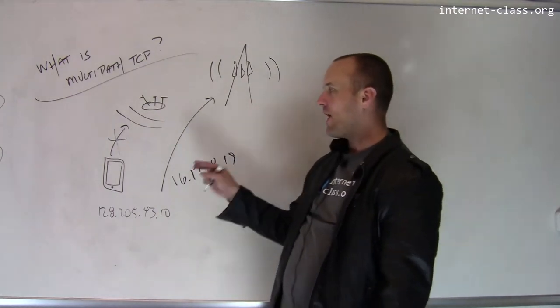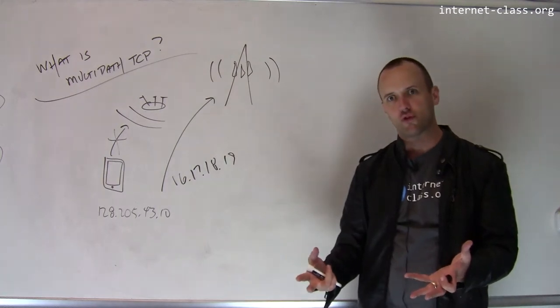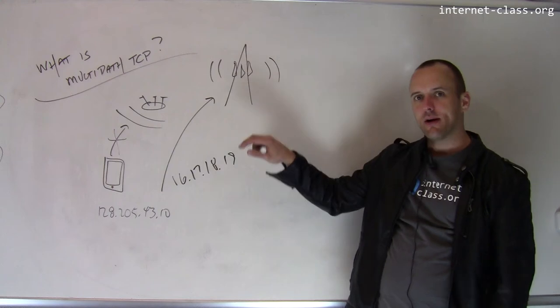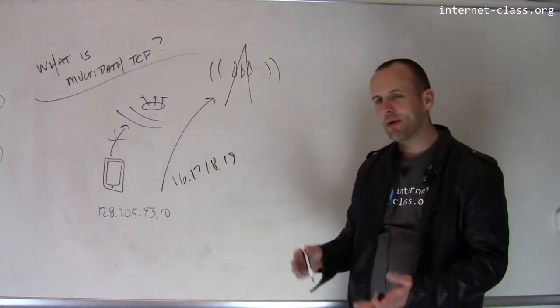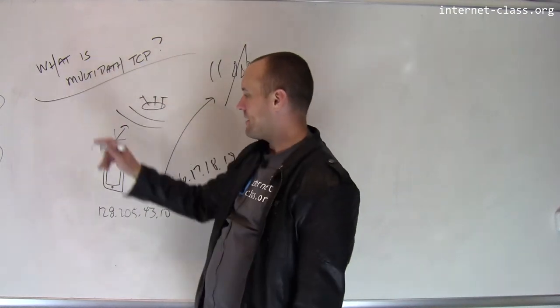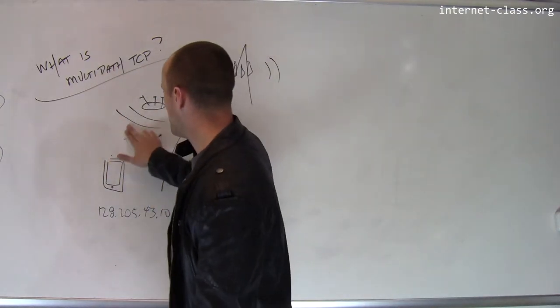So you might also say, why does my phone have to choose? Why does it have to choose to connect to the Wi-Fi network or to connect to this LTE network? You know, I'm allowed to use both. Should I be able to use both at the same time?